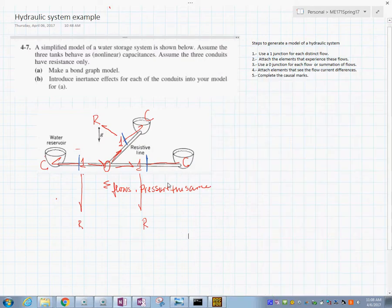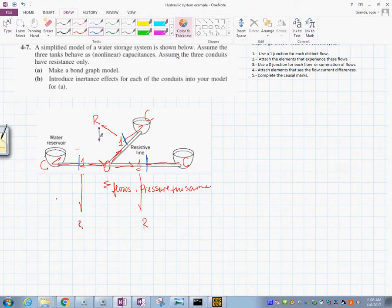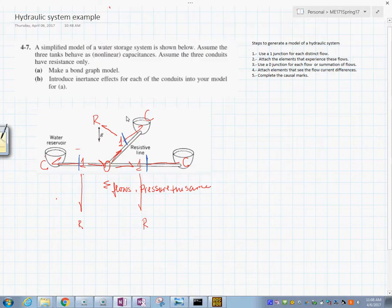We are going to do the second modification. Part B says introduce inertia effects for each of the conduits into the model. Well, that should not be too hard. Inertia effect would be to put an I element.